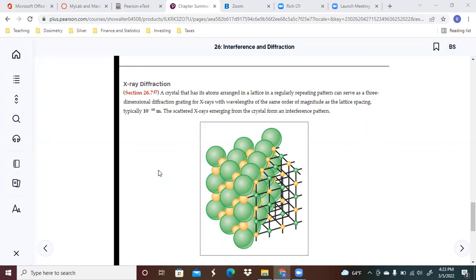This is going to be the lecture over 26.7 X-ray diffraction. So let's say you got a crystal here that has its atoms arranged in a lattice in a regularly repeating pattern that can serve as a three-dimensional diffraction grating for X-rays. This will have wavelengths of the same order of magnitude as the lattice spacing.